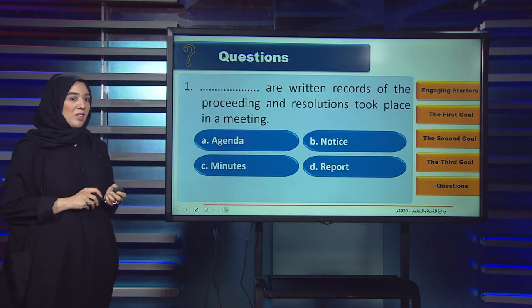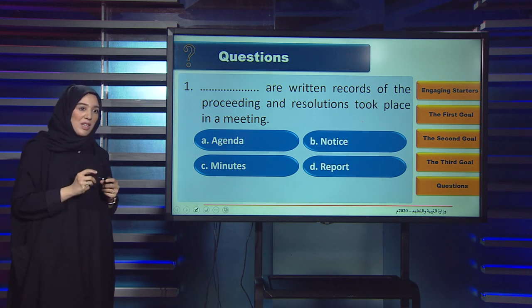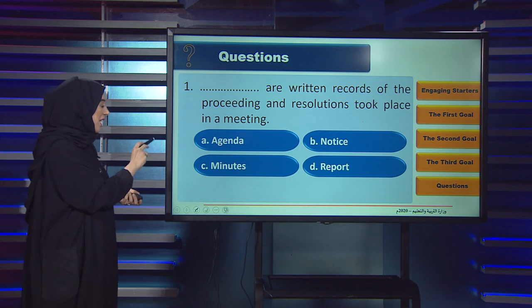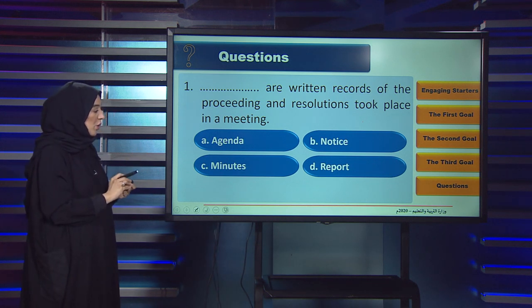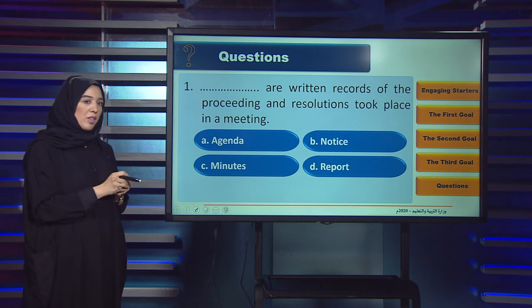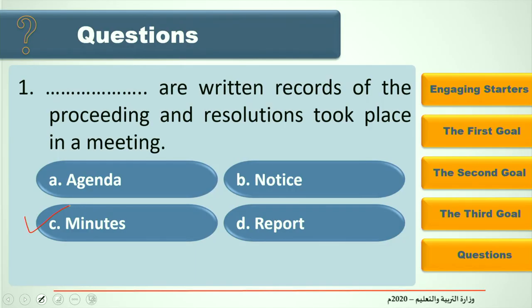Now we'll take questions. Question one: Blank are written records of proceedings and resolutions that took place in a meeting. A. Agenda, B. Notice, C. Minutes, D. Report. The answer is C: Minutes.